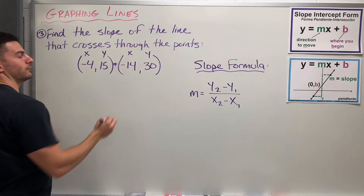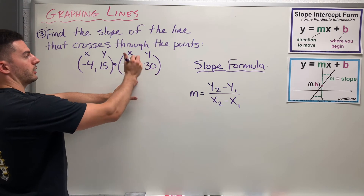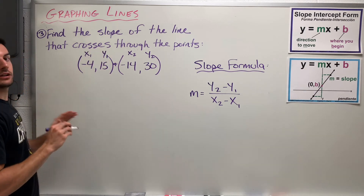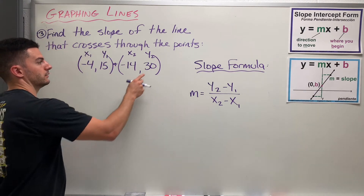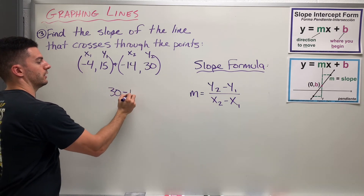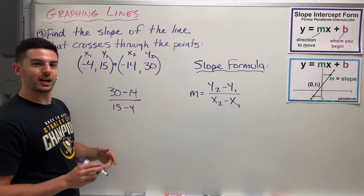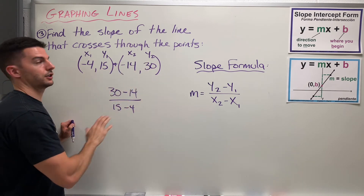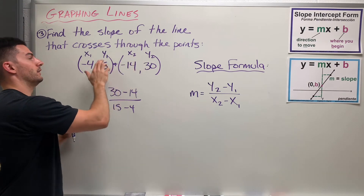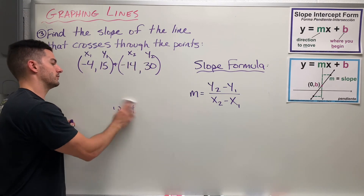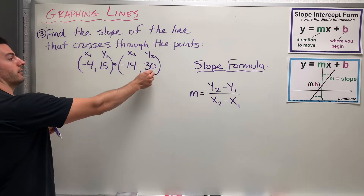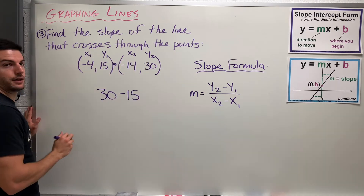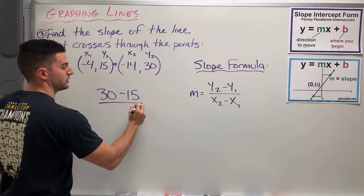So we've got x and y for both points. This is the second point — x2 and y2 — and this is the first point — x1 and y1. A common mistake here is saying 30 minus 14 on top and 15 minus 4 on the bottom — that's wrong because you'd be subtracting values within the same point. That would be y2 minus x2 on top and y1 minus x1 on bottom. Don't do that — you're taking values from different points. So 30 minus 15 is y2 minus y1 on top.